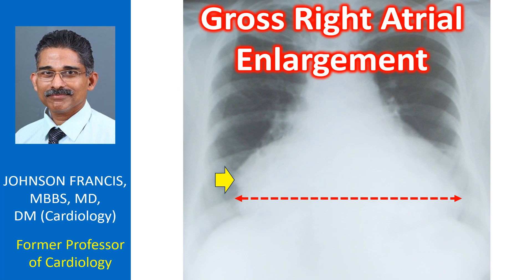Peripheral pulmonary vasculature is not so prominent, indicating that the right atrial enlargement may be due to severe pulmonary hypertension and right ventricular failure. Organic tricuspid valve disease has to be considered as the cause for right atrial enlargement in this situation.